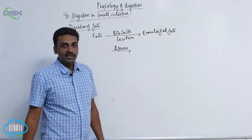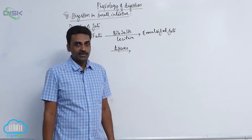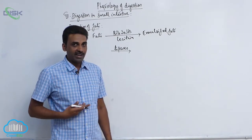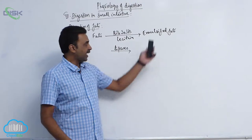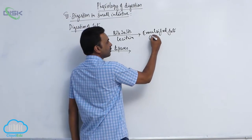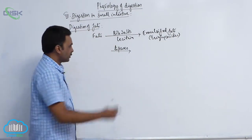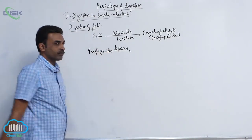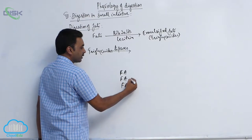Lipid-digesting enzymes are called lipases. The major lipases include pancreatic lipase and intestinal lipase. Pancreatic lipase is also called steapsin. Both lipases act on emulsified fats. The emulsified fats contain triglycerides — three fatty acids attached to one glycerol.